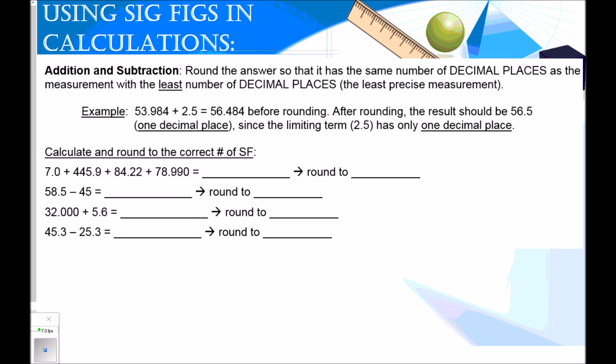Here's an example. If you add together 53.984 plus 2.5, the exact answer you're going to get in your calculator is 56.484 before rounding. What we need to realize in chemistry is you would be adding together measurements. The 2.5 is less precise, so in order to give a precise and accurate answer, we have to round to the least precise measurement. Our least precise measurement has one decimal place, therefore our answer should have one decimal place. The 8 is going to round our 4 up to a 5. So our final answer should be recorded as 56.5.